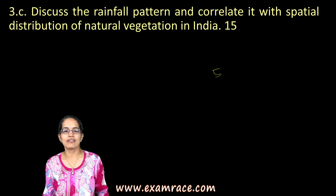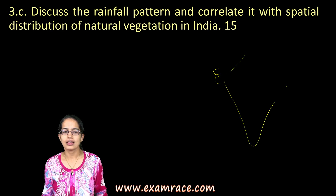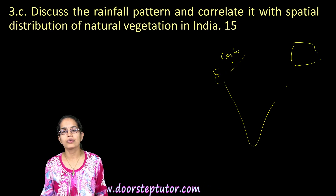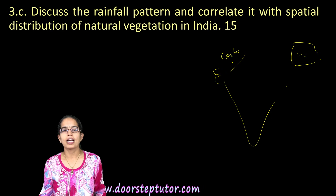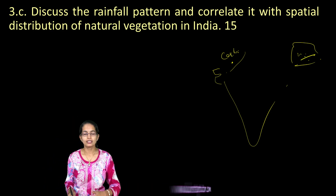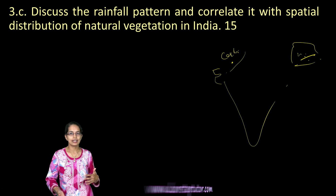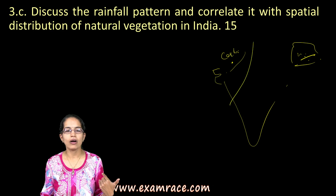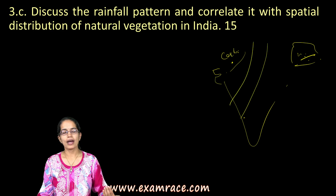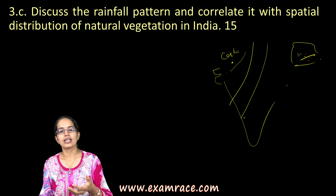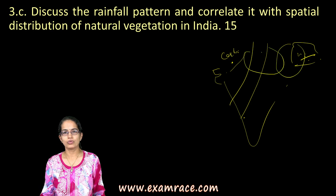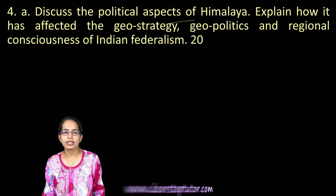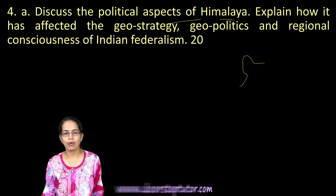The next question asks you to correlate vegetation and rainfall. These are automatically correlated — for example, in the Thar Desert of Rajasthan you have cactus, while in the hills of Meghalaya in Northeast India you have evergreen forest. In your answer, bring out the rainfall pattern lines, understand the vegetation, and overlap those rainfall patterns to explain the correlation.